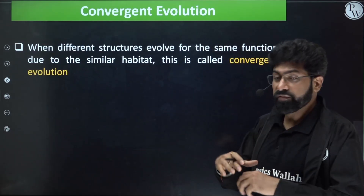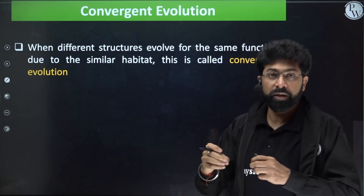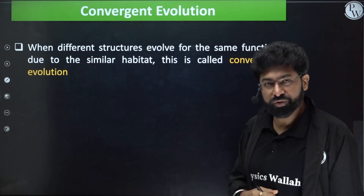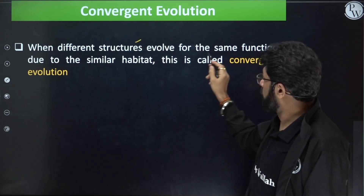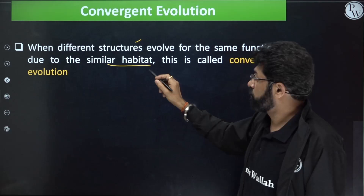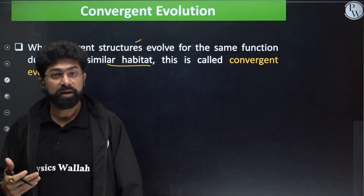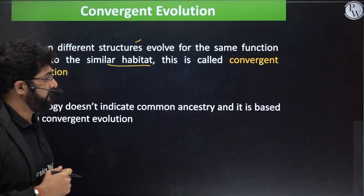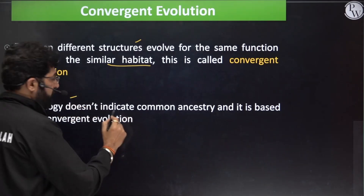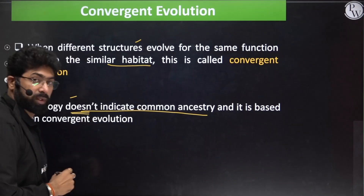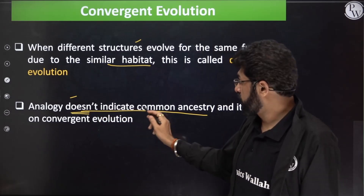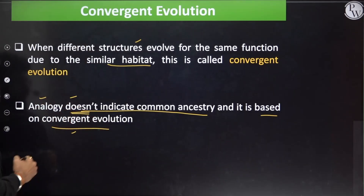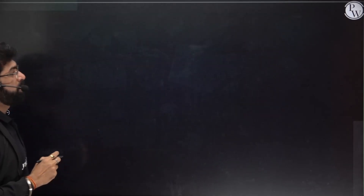Convergent evolution occurs when different species develop the same type of structure due to living in the same habitat. When different structures evolve for the same function due to similar habitat — for example in water — this results in convergent evolution. Analogy does not indicate common ancestry; common ancestry is shown by homologous structures. Analogy is based on convergent evolution.